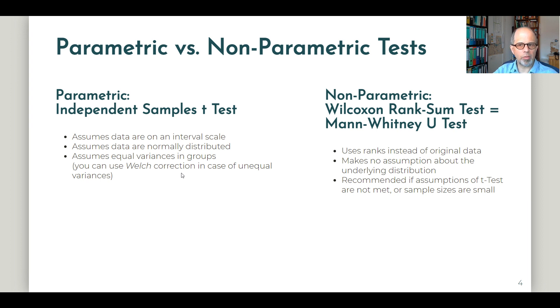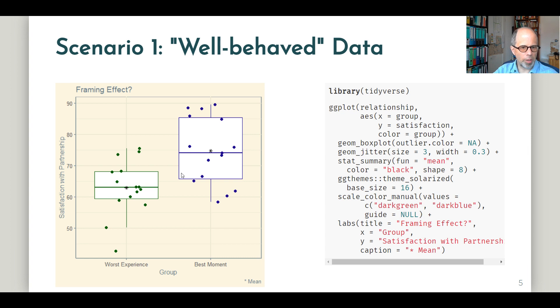Let's compare these two tests on our data. This is the data we have. You see the R code for the plot on the right-hand side. The group that was made to think of the worst experience is displayed on the left, and the group that was made to think of their best moment is displayed on the right. The visual impression shows that the best moment group is clearly more satisfied with their relationship than the worst experience group. Next to the box plot and the median displayed by this horizontal line are also displayed the mean value, using this asterisk or star. We see the data are fairly normally distributed.